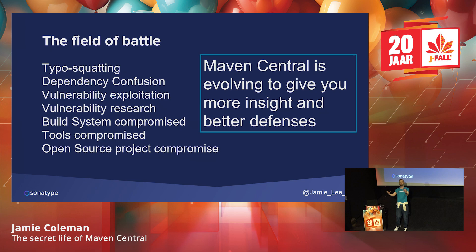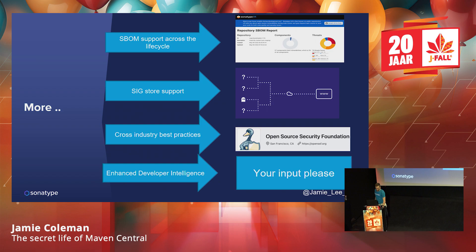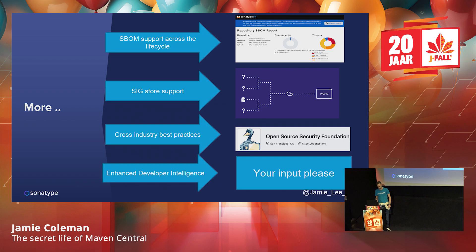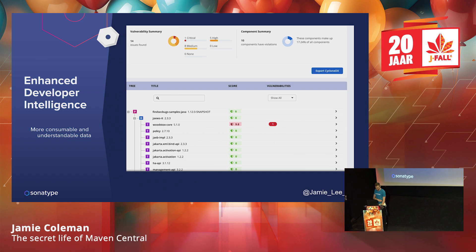That's why Maven Central is evolving — to give you as a developer and consumer of open source code more insight into what's going on. New things include signing required for publishers, SBOM support — Software Bill of Materials. When you download a dependency you can get an SBOM with it, showing what that dependency includes, basically looking at the internals of what you're downloading. Organizations like OpenSSF are trying to put standards in place to make sure we're not just downloading really bad stuff. Any ideas for how we can increase security in the repository — please let us know.